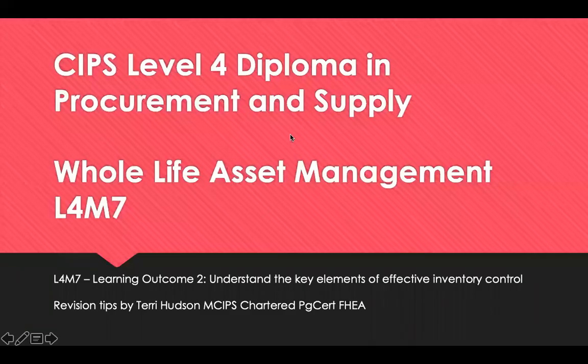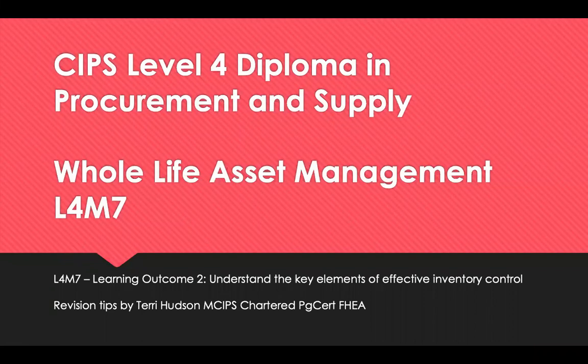Hello and welcome to revision tips for CIPS Level 4 Diploma in Procurement and Supply. This is Module 7, Whole Life Asset Management, and it's Learning Outcome 2, which is to understand the key elements of effective inventory control. We're going to differentiate between the different classifications of inventory, direct and indirect costs of holding inventory, and techniques associated with inventory control.